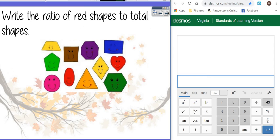Let's check the next one. It says what's the ratio of red shapes to total shapes. So we want red to total. Total means count it all even the red ones.